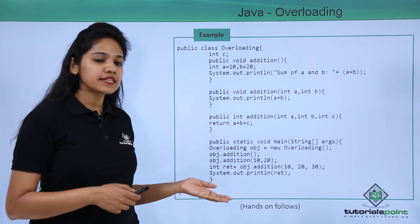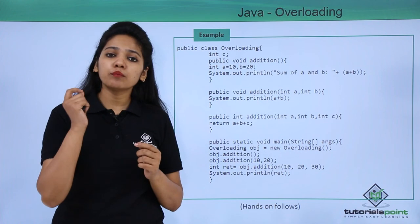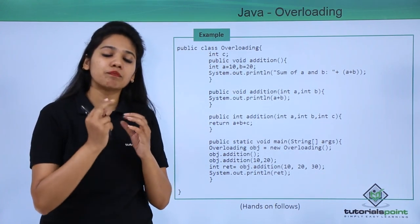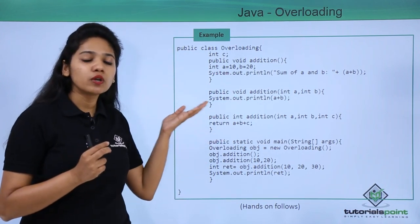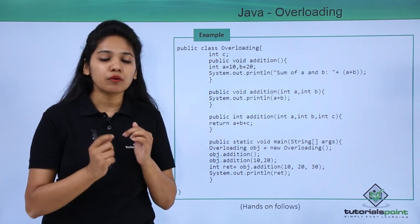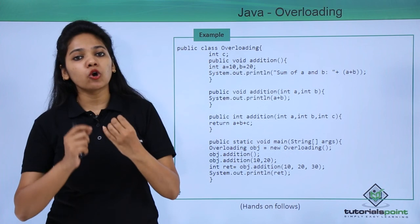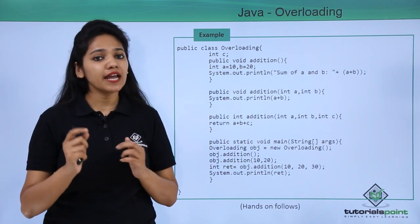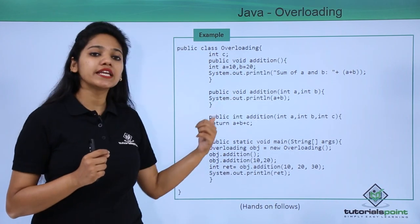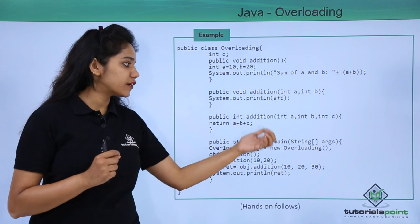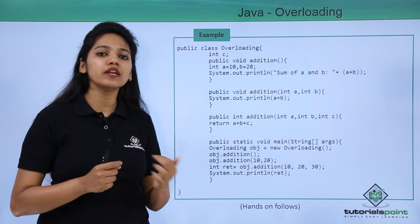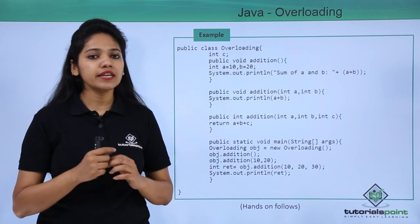One important note: when does the method call get bound? Method overloading, which is compile time polymorphism, is nothing but static polymorphism. The binding of the method call happens at compile time and not at run time. We have created an example with an 'addition' method with different sets of parameters to demonstrate this.